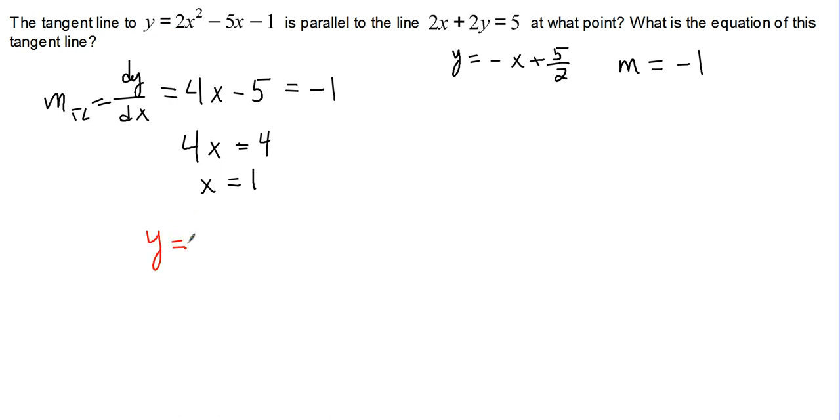So y is equal to 2 times 1 squared minus 5 times 1 minus 1, or y equals 2 minus 5 minus 1, which is negative 4. So we're looking at the point (1, -4) with a slope of negative 1.